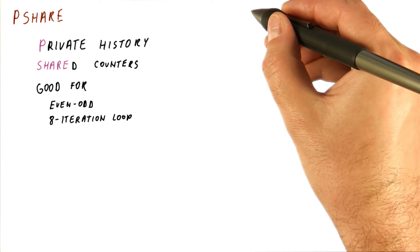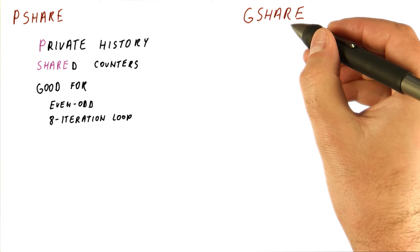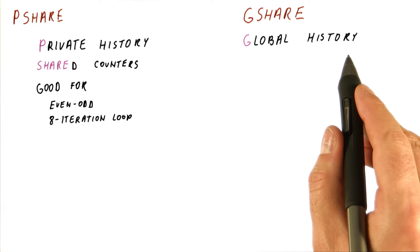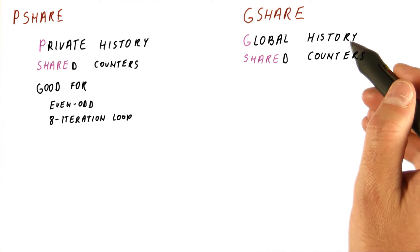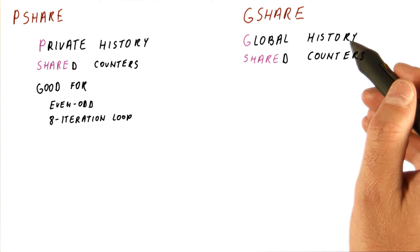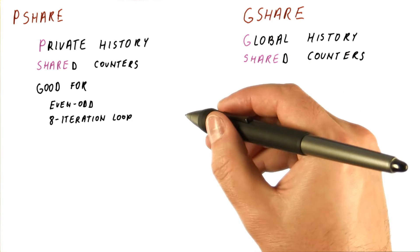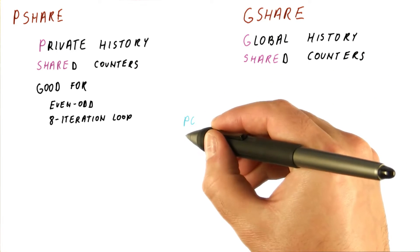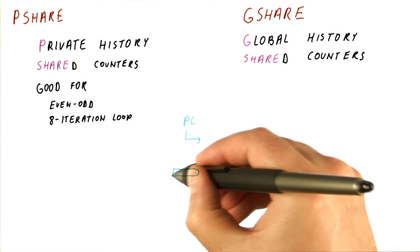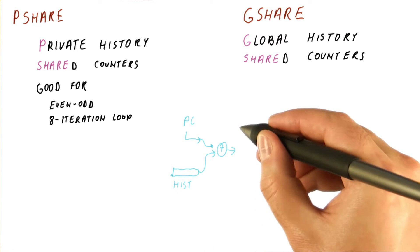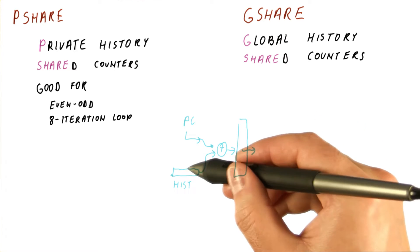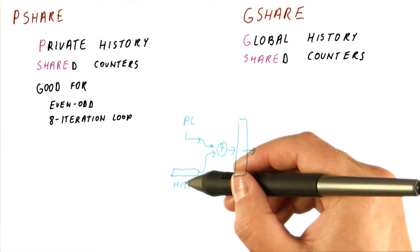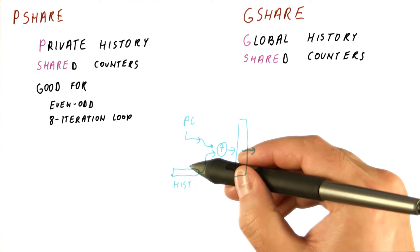Another type of similar predictor is called g-share. It has a global history and shared counters. A global history means there is only a single global history used to predict all branches. We take the PC and a single history together and index into the array of two-bit counters. Every branch decision, regardless of what the PC of the branch is, gets shifted into this history.